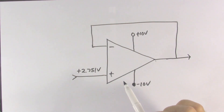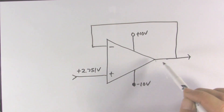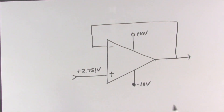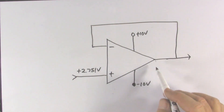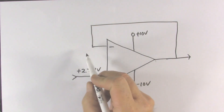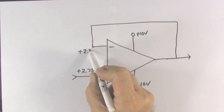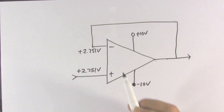Now, what does the circuit do? It will change its output voltage to whatever it takes to make the two input voltages equal. We're going to assume that the circuit has made the output to whatever it takes to make the input voltage equal to plus 2.751 volts. So there we have a properly balanced op-amp circuit with the two input voltages equal.